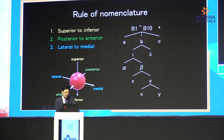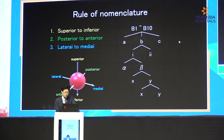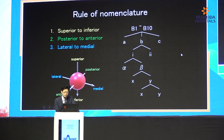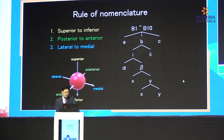This is the second generation B1, from B1 to B10. Next, third generation A, B, C. Fourth generation small one, small two, and alpha, beta, followed by X, Y.